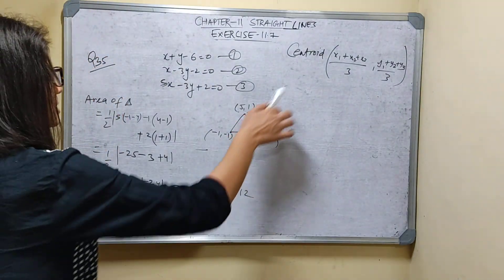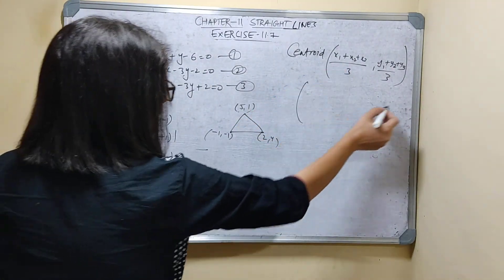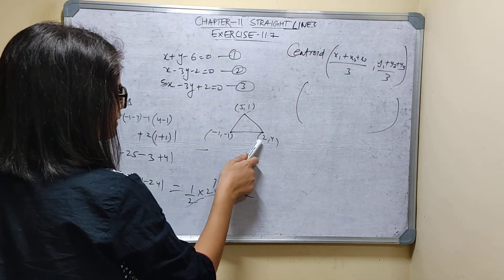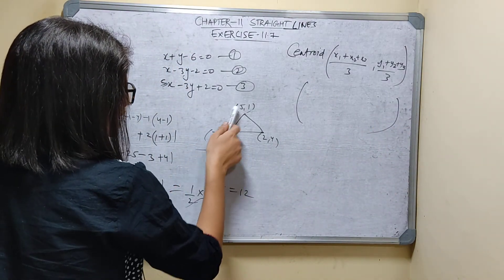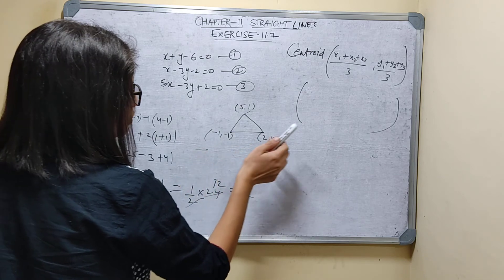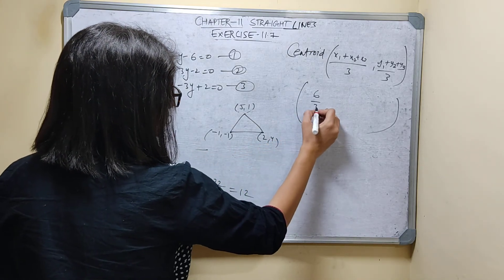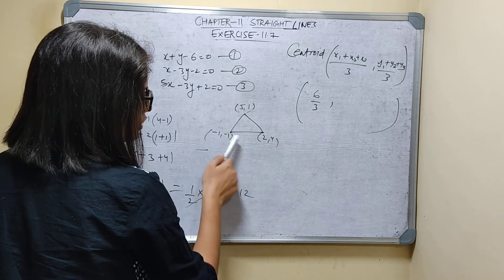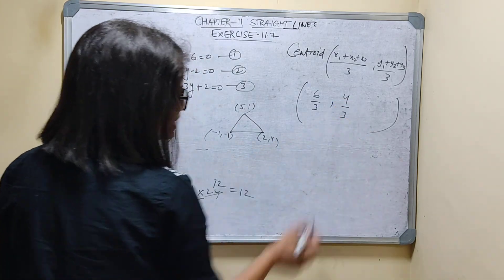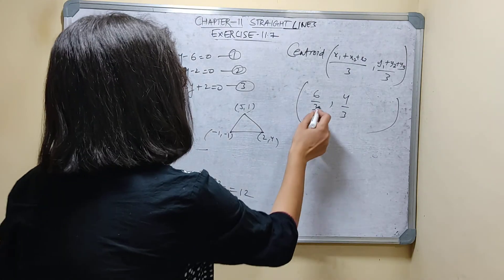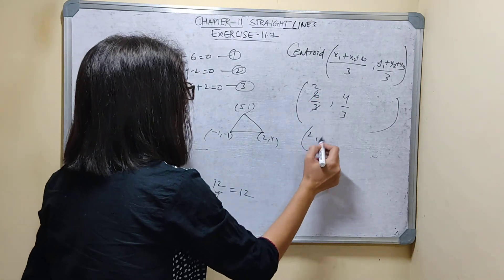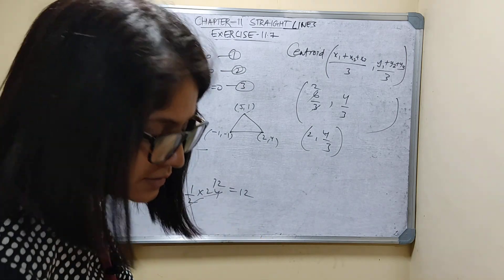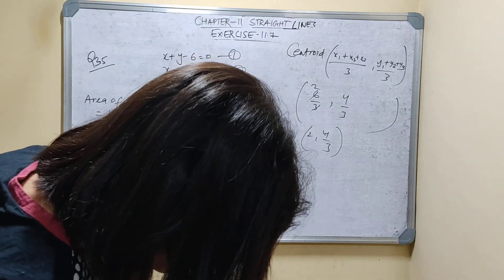Now finding the coordinates of the centroid. x-coordinate: x1 plus x2 plus x3 upon 3 equals 5 plus (−1) plus 2 upon 3 equals 6 upon 3 equals 2. y-coordinate: y1 plus y2 plus y3 upon 3 equals 1 plus (−1) plus 4 upon 3 equals 4 upon 3. So the coordinates of the centroid of the triangle are (2, 4/3).